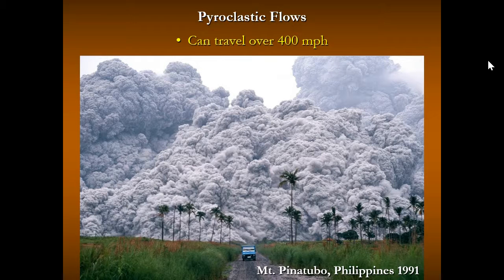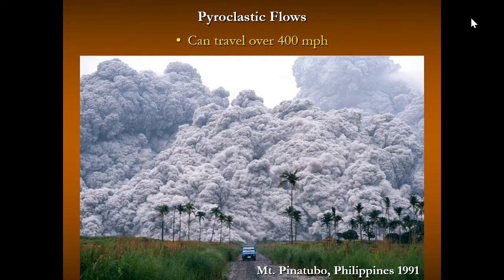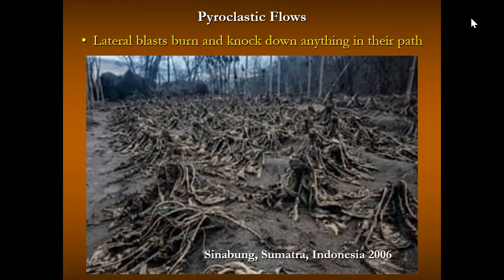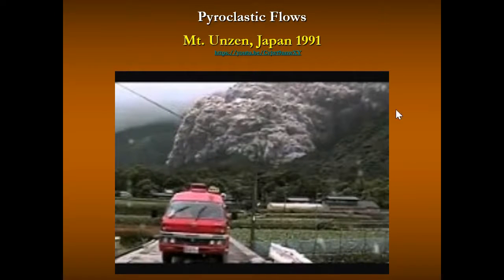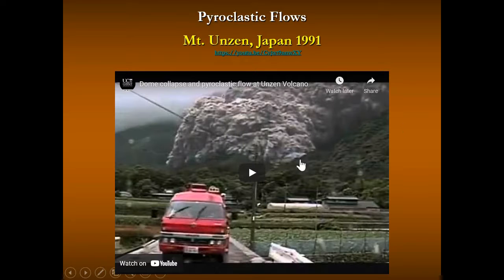There's a vehicle trying to outrun the flow. Depending on how fast the pyroclastic flow is, it can overtake and kill you even in a fast vehicle. Not only do they knock down anything in their path, but they burn everything through as well. Here's a remnant of a pyroclastic flow from Sumatra in 2006, and a picture of a pyroclastic flow coming down Mount Unzen in Japan in 1991.